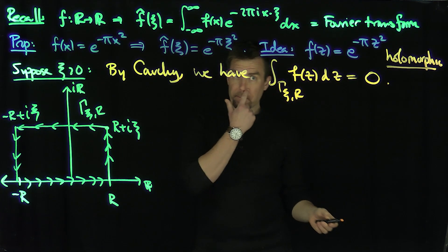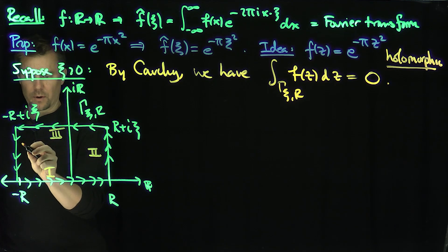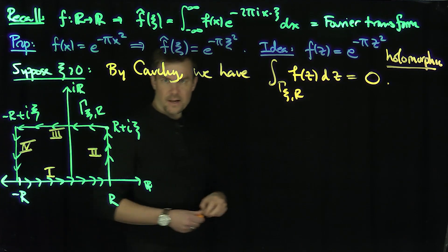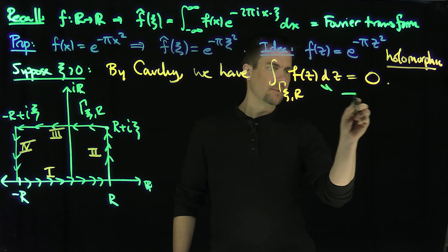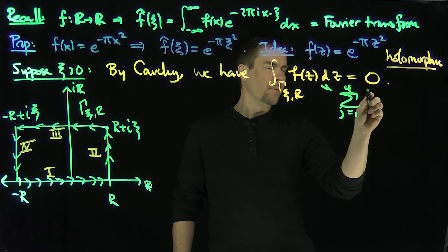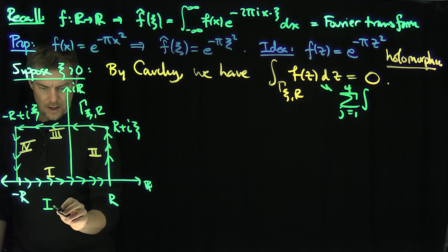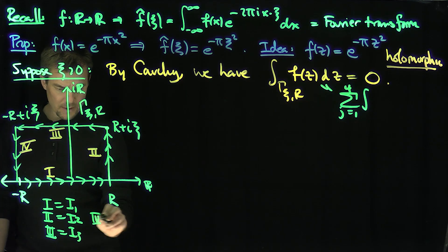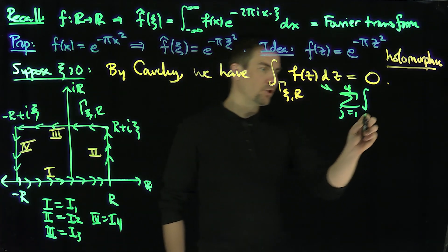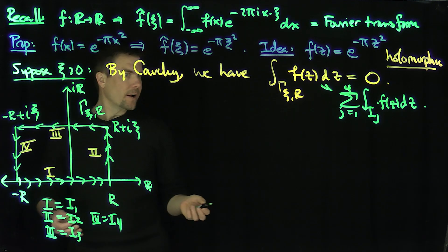Now I'm going to break the contour up into four pieces. I'll call them I₁, I₂, I₃, and I₄, so the integral over γ_{ξ,R} equals the sum I₁ + I₂ + I₃ + I₄ of ∫f(z) dz over each piece, and this total sum is zero.